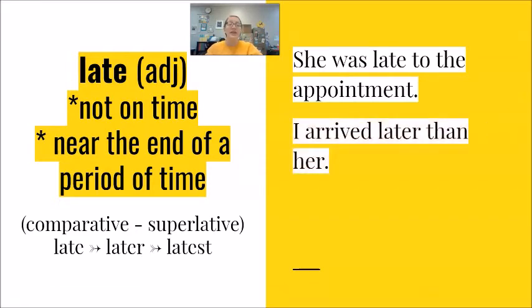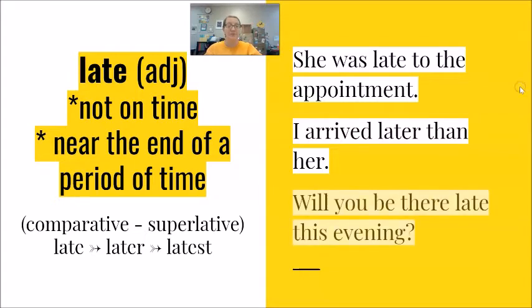I arrived later than her — and you hear that D sound in the word later. Here we are using the comparative: two people, one arrived first, the second arrived later. Will you be there late this evening? You don't hear that strong T at the end — I keep it in, it's unreleased. Will you be there late this evening?